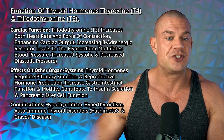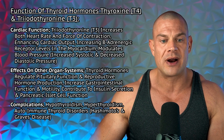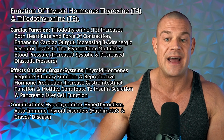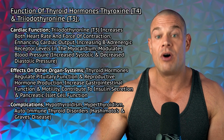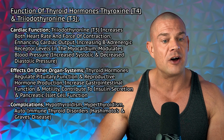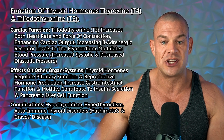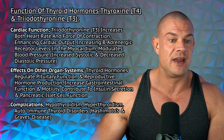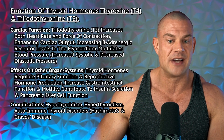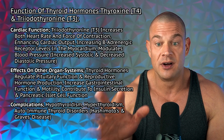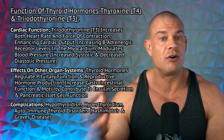Thyroid hormones increase cardiac function — specifically triiodothyronine, which increases both heart rate and force of contraction of the heart, enhancing cardiac output and increasing beta-adrenergic receptor levels in the myocardium. This is why a combination of T3 with clenbuterol is so effective for fat loss, but also very effective at increasing your heart rate for hours on end. T3 also modulates blood pressure, increasing systolic and decreasing diastolic pressure, again through modulation of the force of contraction of the heart.